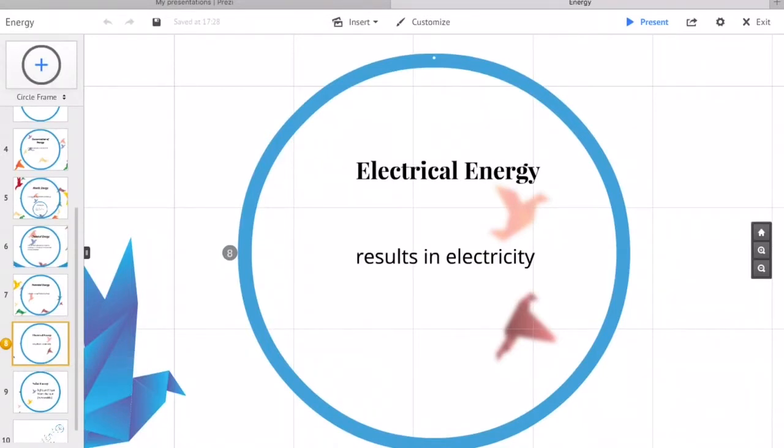Electrical energy is the movement of a charged particle through a wire, resulting in current or electricity. So not surprisingly, electrical energy and electricity are connected.